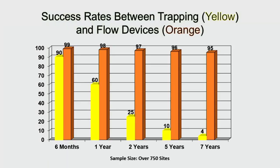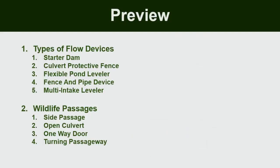Flow devices we usually guarantee will last at least six years, but these are constantly evolving and we're getting them to last 10-plus years now. With all of the different flow devices we put in, we like to see how it worked, what went wrong, and what we can do to make them last even longer. I'm going to go over multiple types of flow devices, as well as wildlife passages we put in to keep culverts open for wildlife.